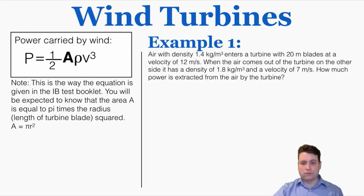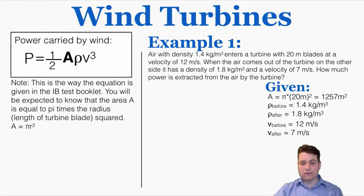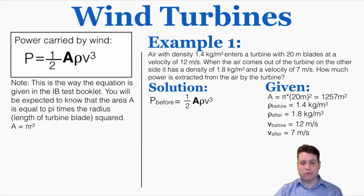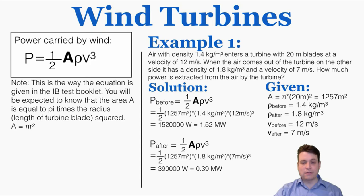Example 1: Air with density 1.4 kg/m³ enters a turbine with 20-meter blades at 12 m/s. After passing through, it has density 1.8 kg/m³ and velocity 7 m/s. How much power is extracted? The turbine area A = π(20)² ≈ 1,257 m². Power before: P = ½ × 1,257 × 1.4 × 12³ = 1.52 MW. Power after: P = ½ × 1,257 × 1.8 × 7³ = 0.39 MW. Difference: 1.52 − 0.39 = 1.13 MW extracted by the turbine.